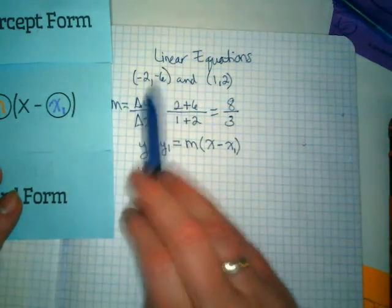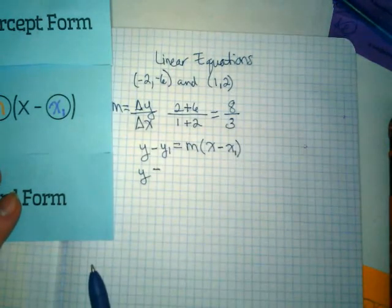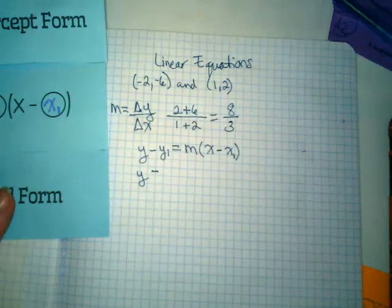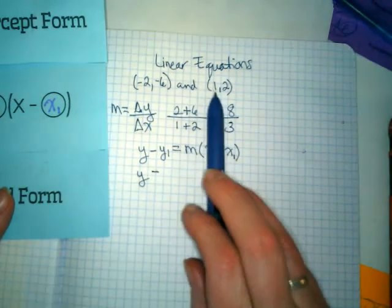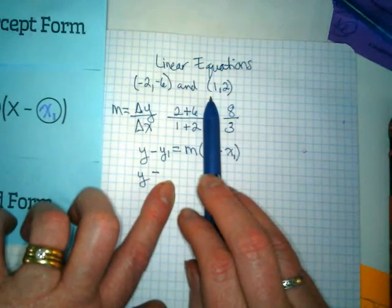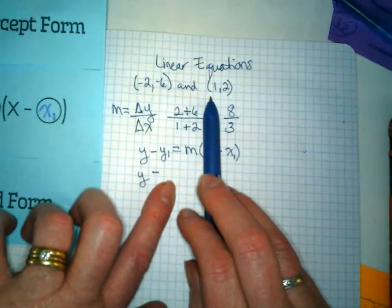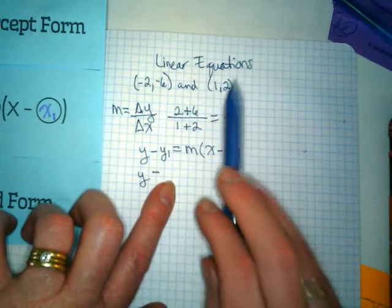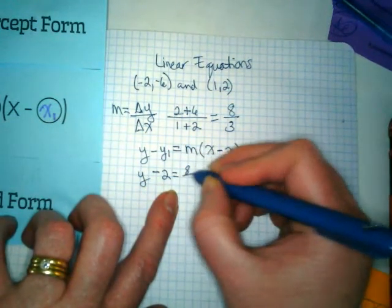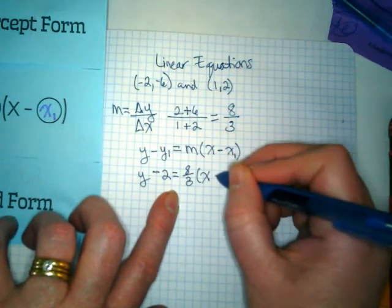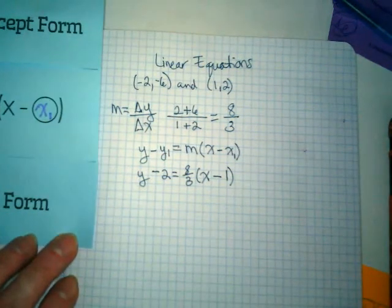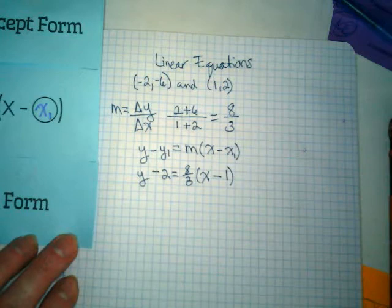So we get to choose which one we want to do. Which ordered pair do you guys want us to use? The first one or the second one? Negatives or positives? Okay. Here is one of the things I don't like about this equation. Ordered pairs say what first? X or Y? The equation shows Y first though. So just be careful. So if I'm going to use this ordered pair, I'm going to say Y minus 2 is equal to my slope of 8 over 3 times X minus 1.